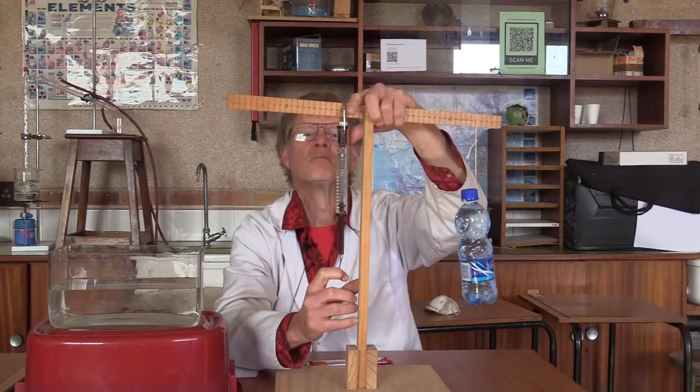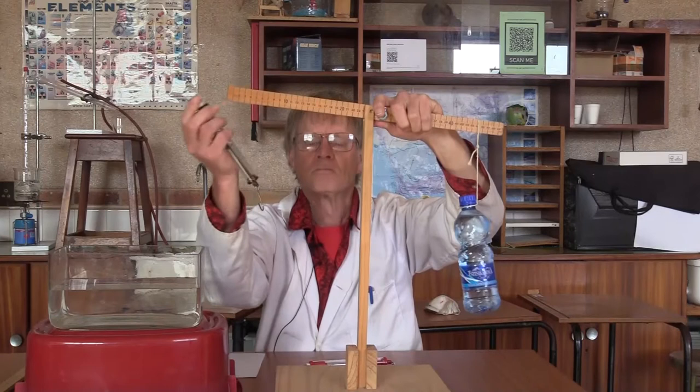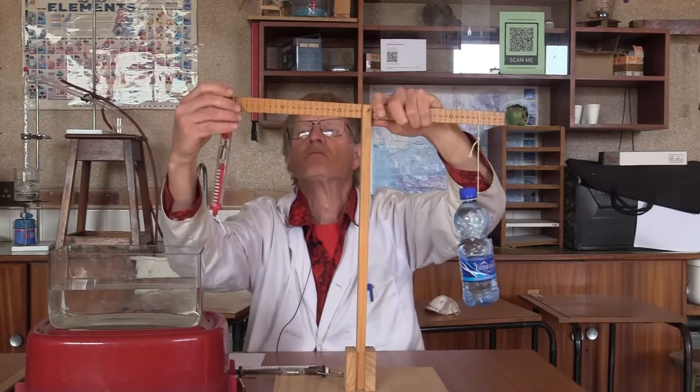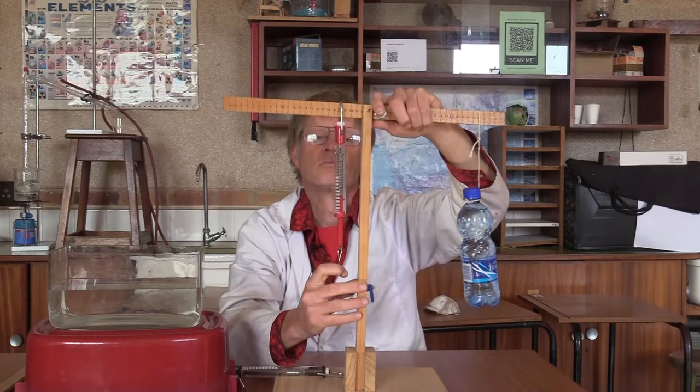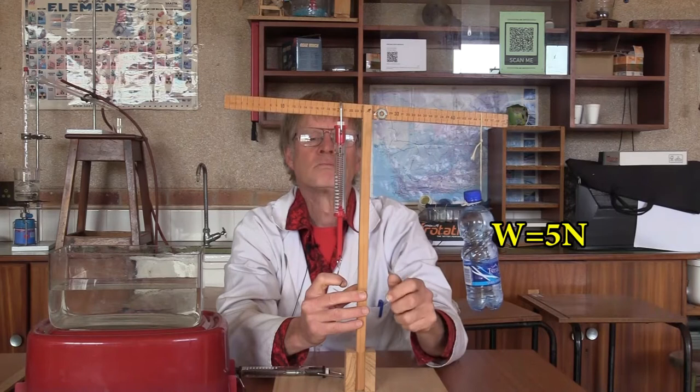And now we bring it closer still to 5 centimeters, but it goes off the scale. So instead we use the other spring scale, the red one, which can have a maximum of 20 newtons. And when we balance it, we see the reading on the scale is 20 newtons.